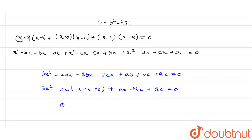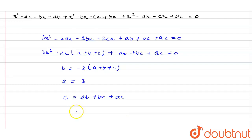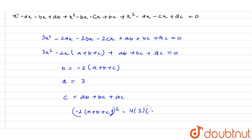The value of b here is -2(a + b + c), the value of a is 3, and the value of c is ab + bc + ac. So b² - 4ac becomes [-2(a + b + c)]² - 4 × 3 × (ab + bc + ac).